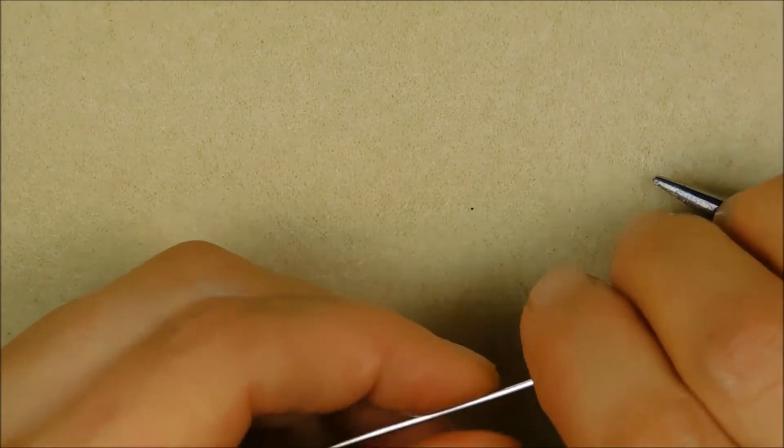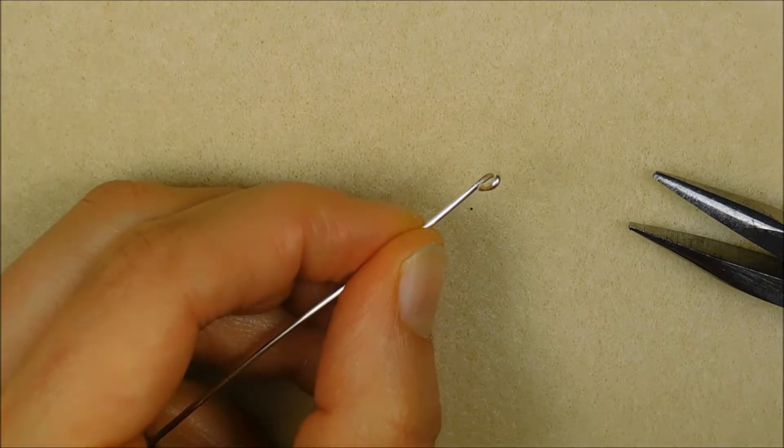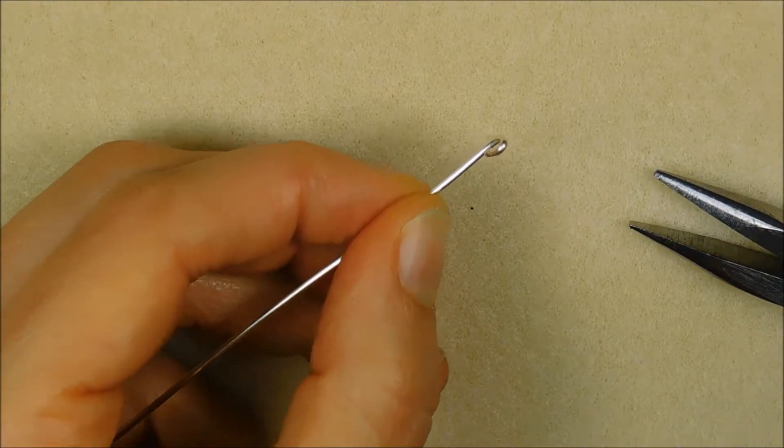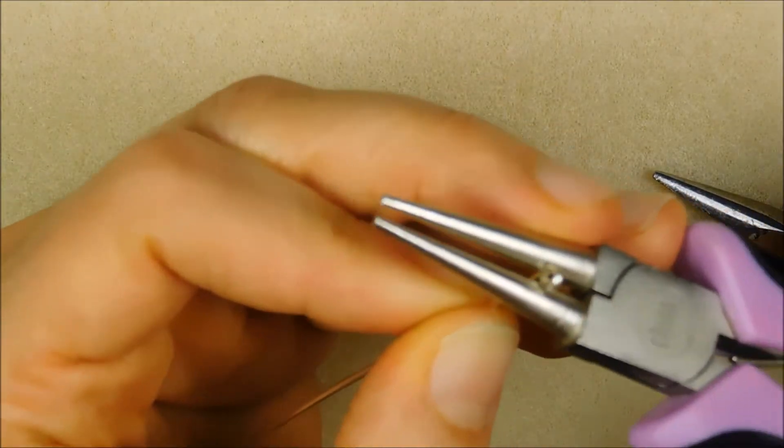Using the largest possible point on your round nose pliers, make a basic loop that faces the opposite direction of the small roll. This creates the hook part of the clasp.